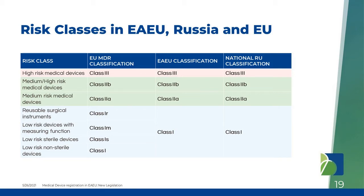The next important topic is risk classification in the Eurasian Union. Comparing MDR, Russian national classification, and Eurasian classification: the Eurasian Union risk classification uses the same classes. The European Union classification has a more detailed first risk class, while Eurasian Union classification has only one first risk class — there was an attempt to adopt the European approach to risk classification, but currently there is only one Class I.